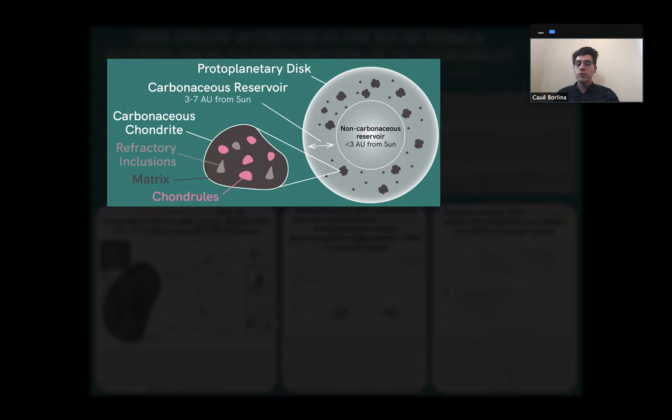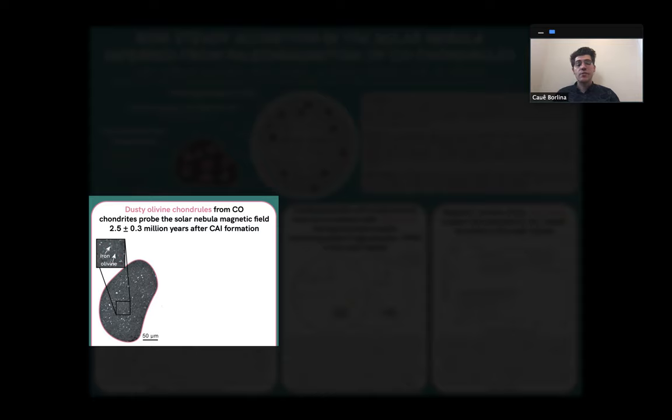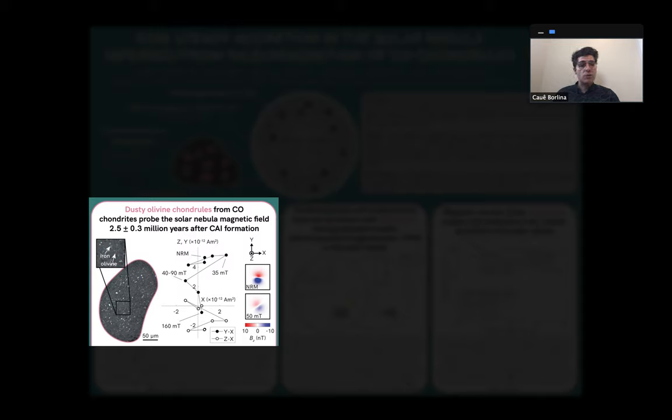Here we focus on the chondrules, specifically the dusty olivine chondrules. Those are very robust paleomagnetic targets, very rare to find among those samples. We target those with SQUID microscopy, alternating field demagnetization, and ARM methods to determine the paleointensities and demagnetization curves.